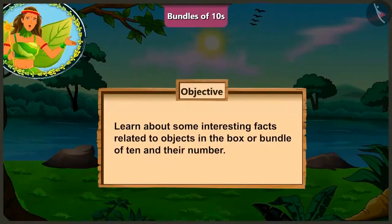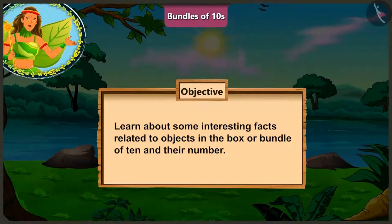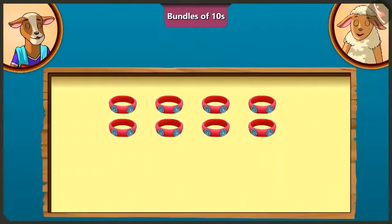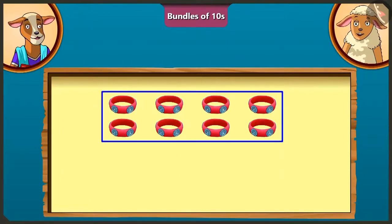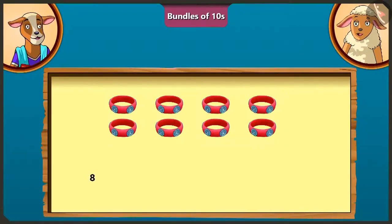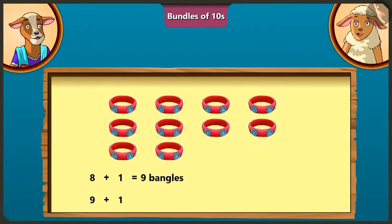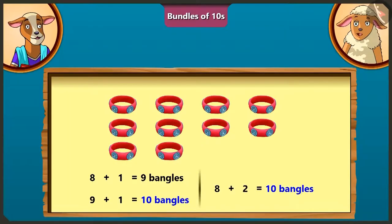Today we will learn about some interesting facts related to objects in the box, or bundle of tens, and their number. Lily, if I have 8 bangles, how many bangles would I have to add so I would have 10 bangles? On adding 1 to 8 we get 9, and by adding 1 to 9 we get 10. So we will have 10 bangles by adding 2 bangles to 8.